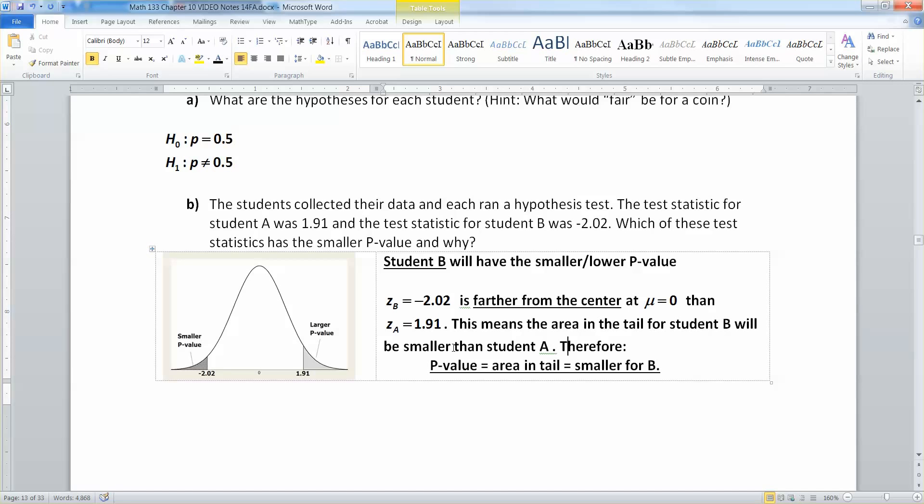Therefore, the p-value, which is the area in your tail, is smaller for student B. And that's what they were asking about.